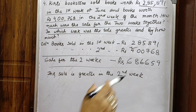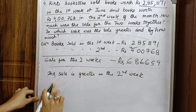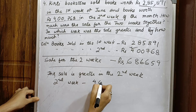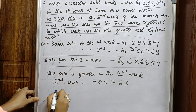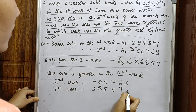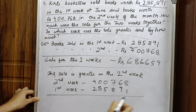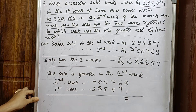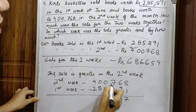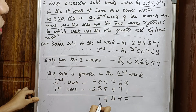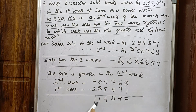The sale is greater in the second week. By how much? We subtract the first week from the second week: 4,00,768 minus 2,85,891. Working through: 8 minus 1 is 7, borrowing gives 16 minus 8 is 8, then 4, then 1, then 1 — giving 1,14,877. The second week's sale is greater by rupees 1,14,877.